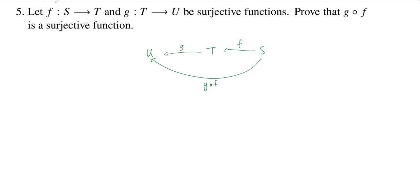So if I'm claiming that g composed f is a surjective function, then my proof requires me to show that every element in u has a g composed f preimage. So g composed f is surjective if and only if every u in u has a g composed f preimage.